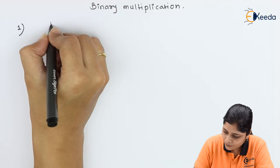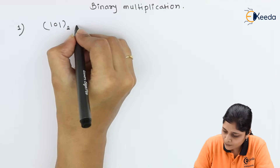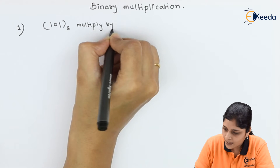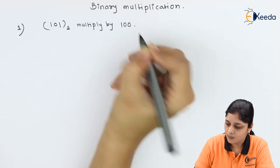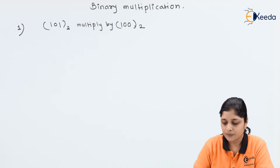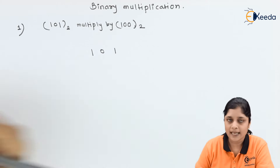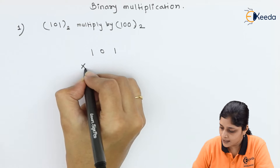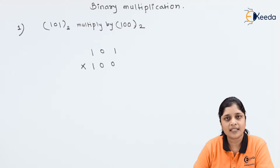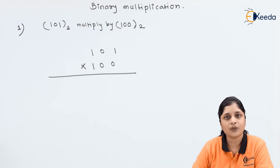If you have 101 base 2, you have to multiply by 100 base 2. The step is: write down 101 as it is, multiplied by 100. You have to apply the successive addition technique, considering one term at a time.